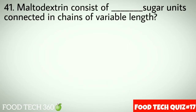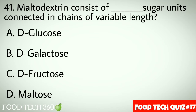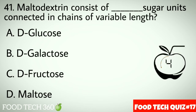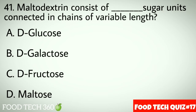Question number 41: Maltodextrin consists of dash sugar units connected in chains of variable length. Options: A. D-Glucose, B. D-Galactose, C. D-Fructose, D. Maltose. Correct answer: A. D-Glucose.